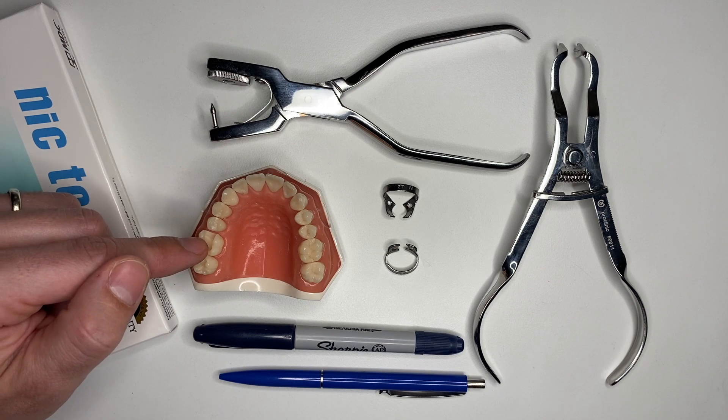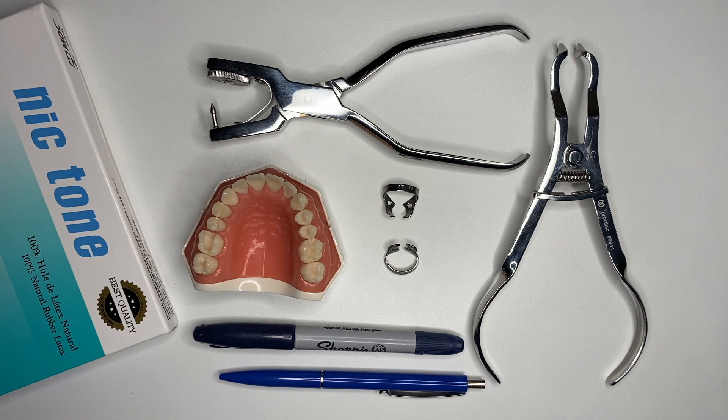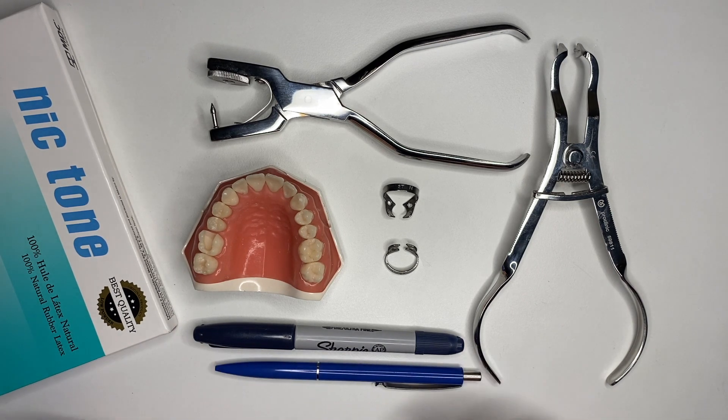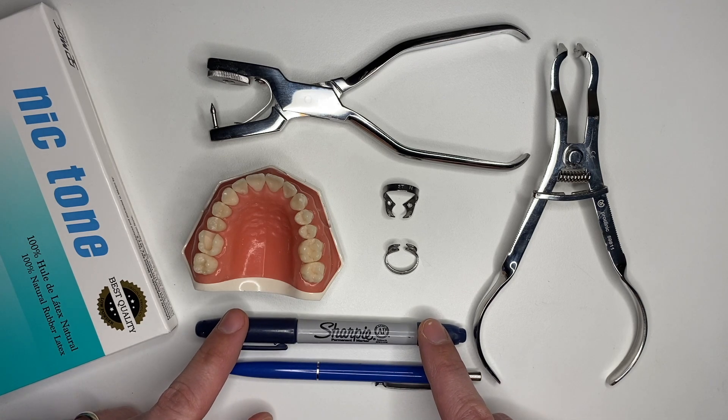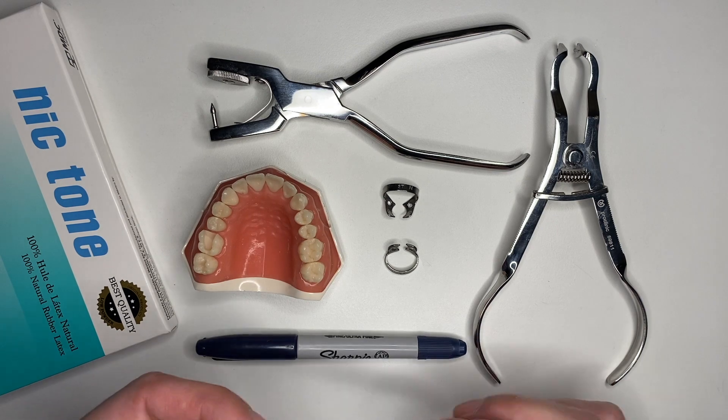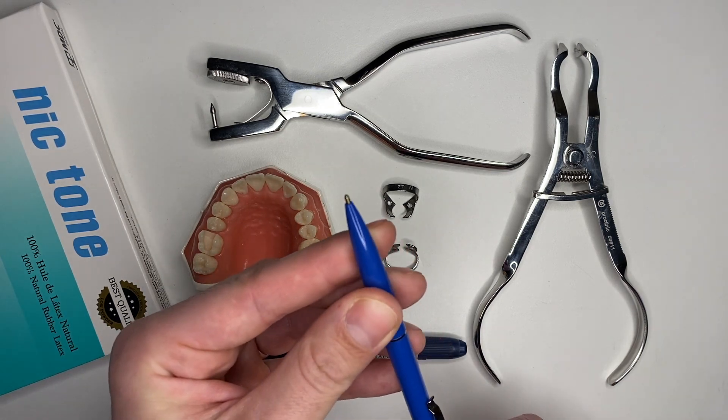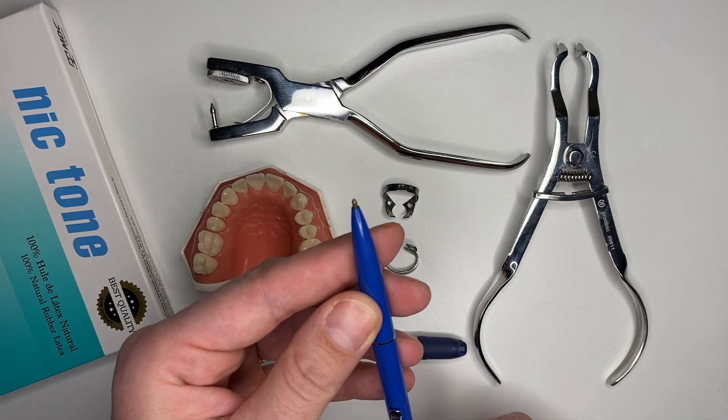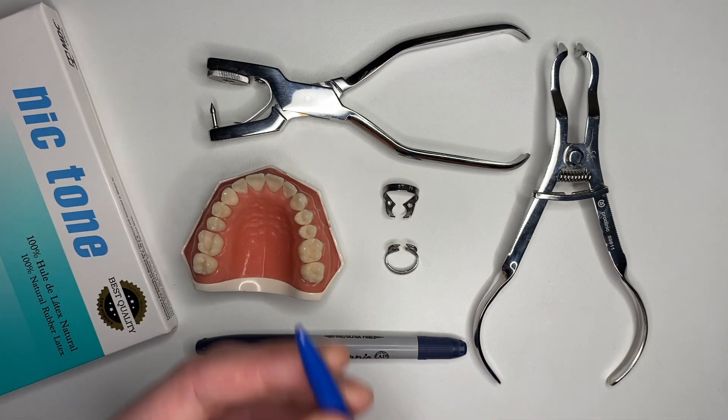First things first, make sure that you use a Sharpie or a marker to mark your rubber dam, because if you're going to use a regular ballpoint pen, this is going to damage the rubber dam and you might not be able to use it properly.